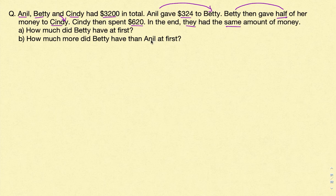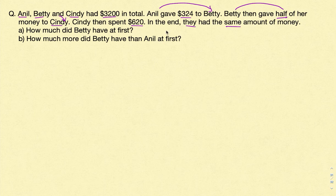At the end, they all have the same amount of money. For these types of questions, we usually solve by going backwards — that means whatever you have at the end, from there you start and go back one step at a time. At the end, all three people — Anil, Betty and Cindy — have the same amount of money.